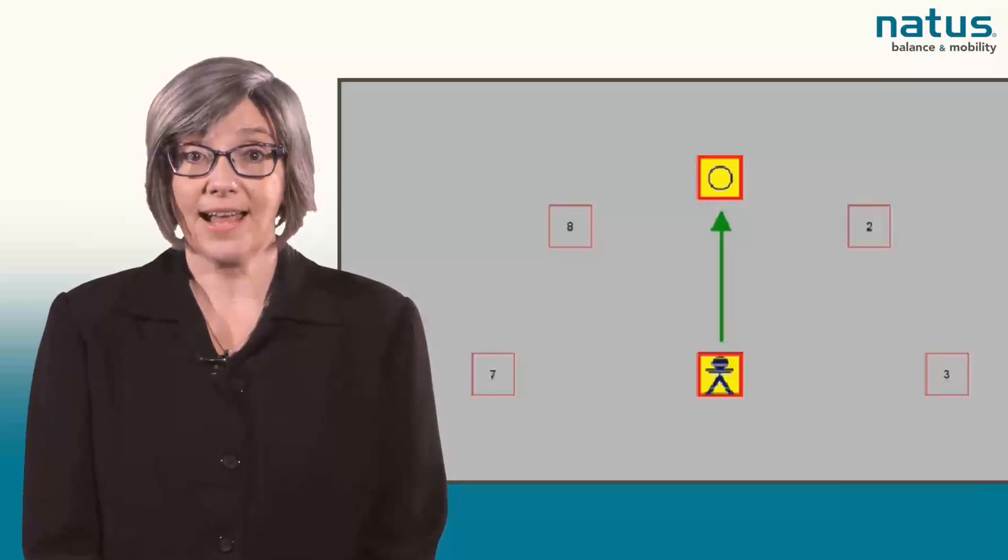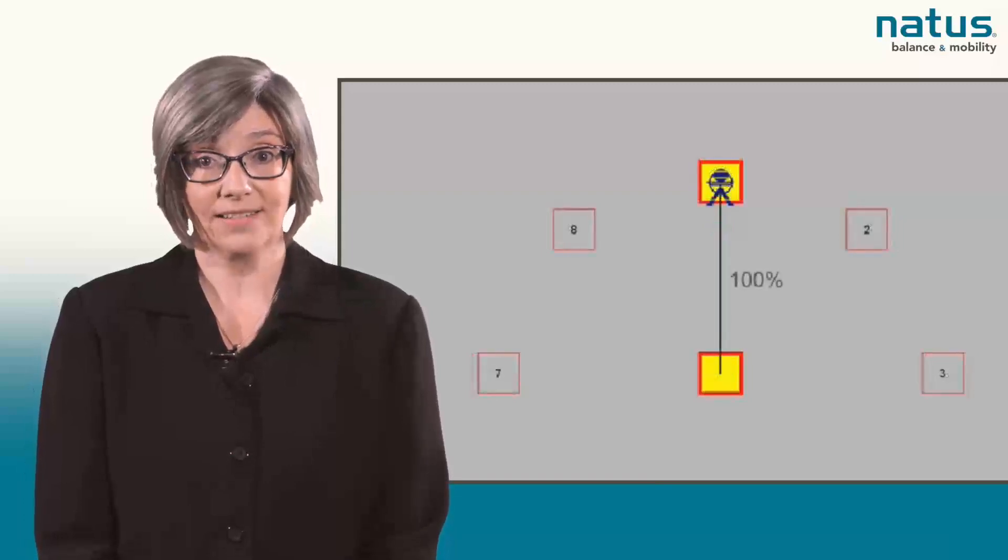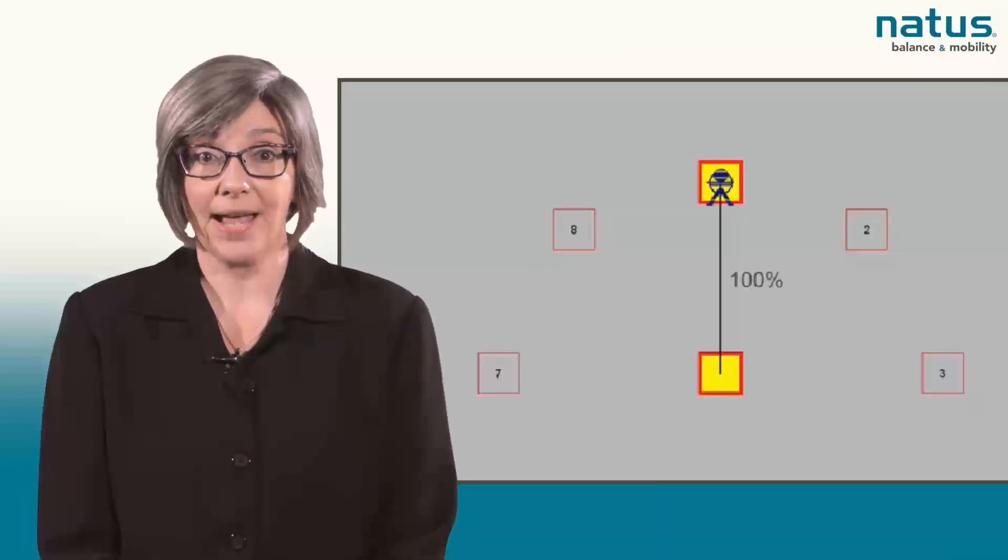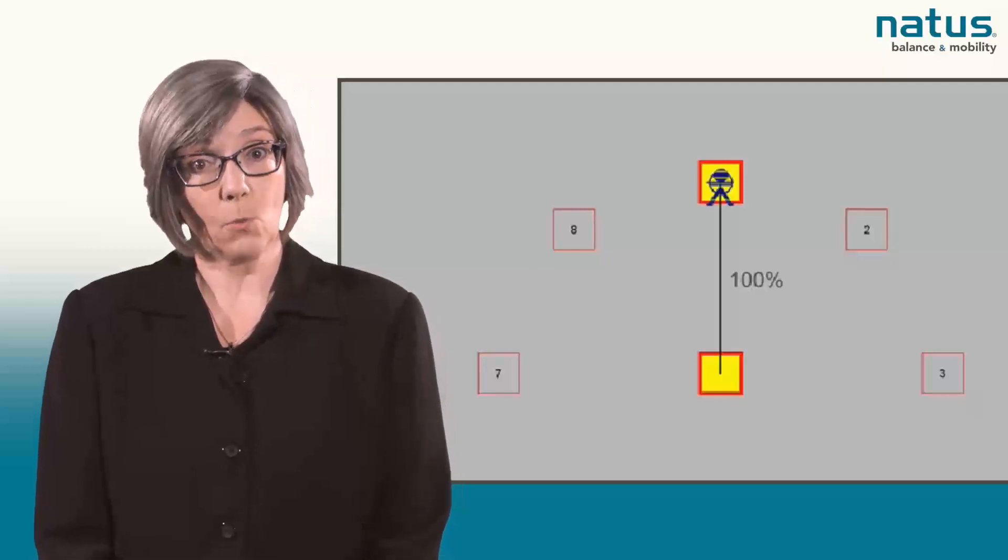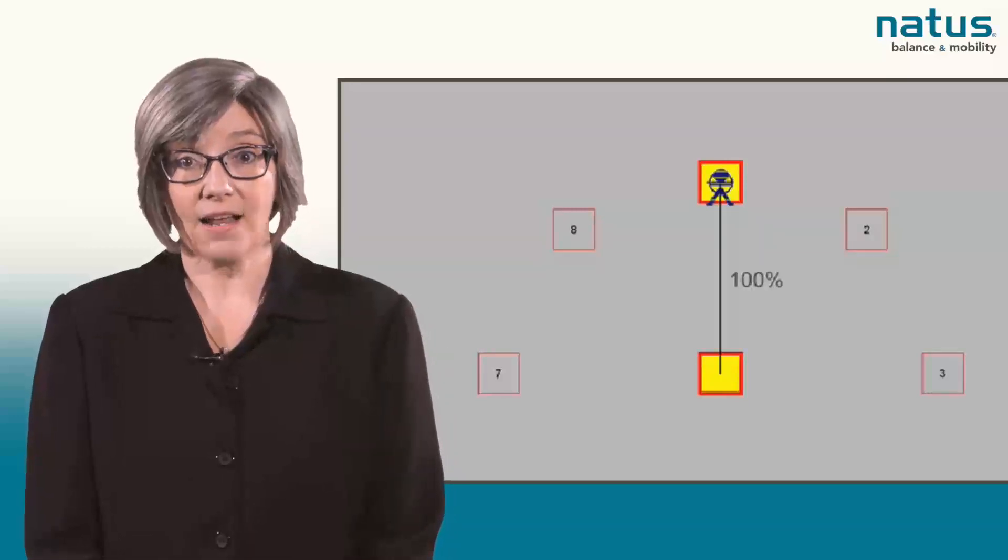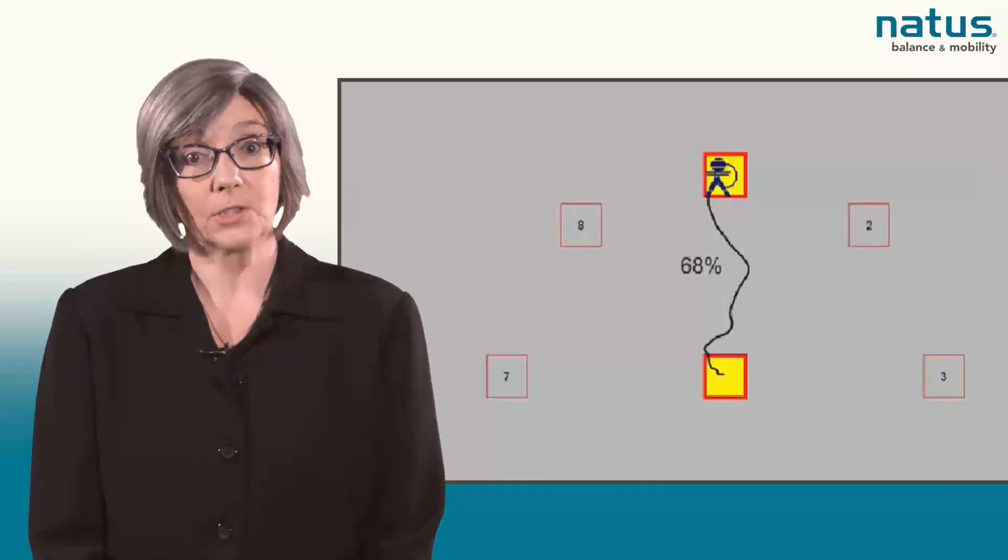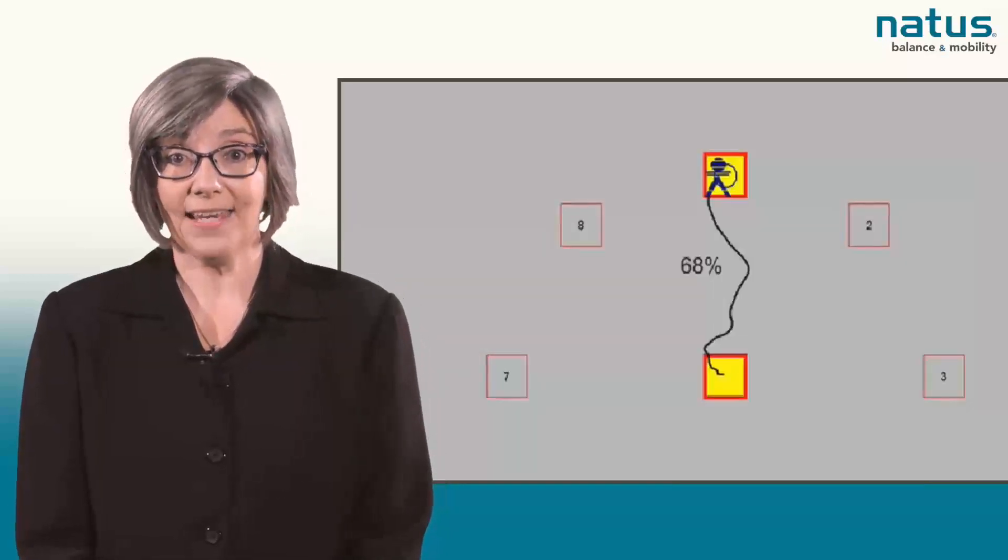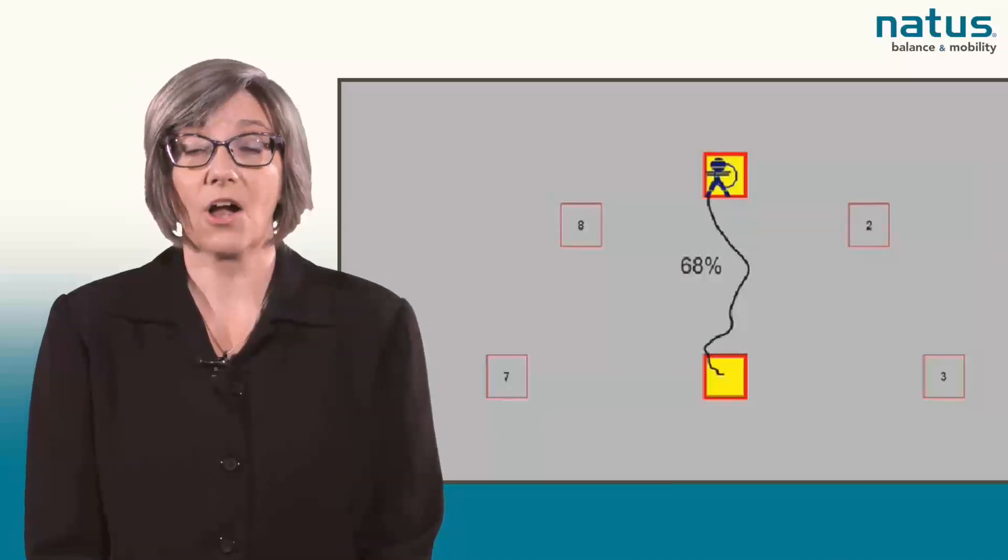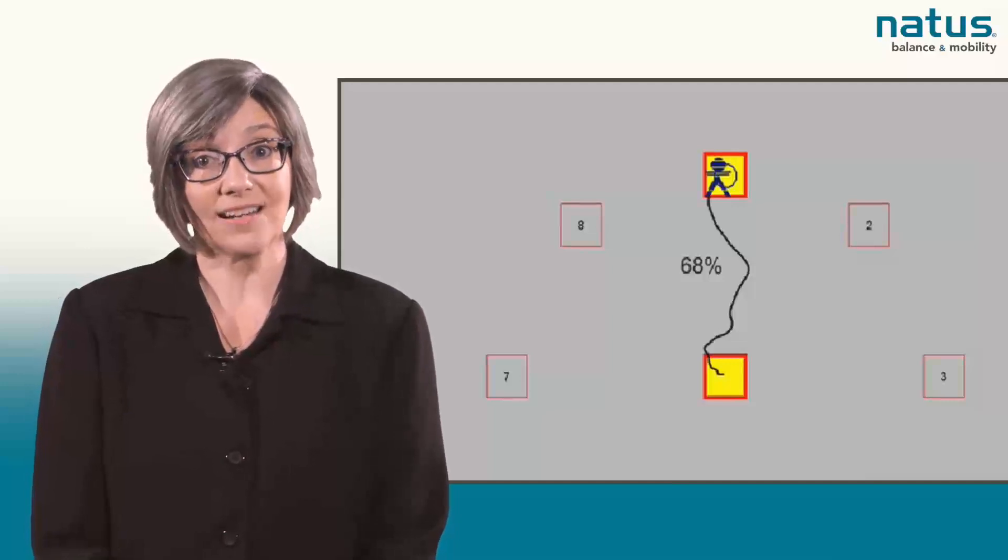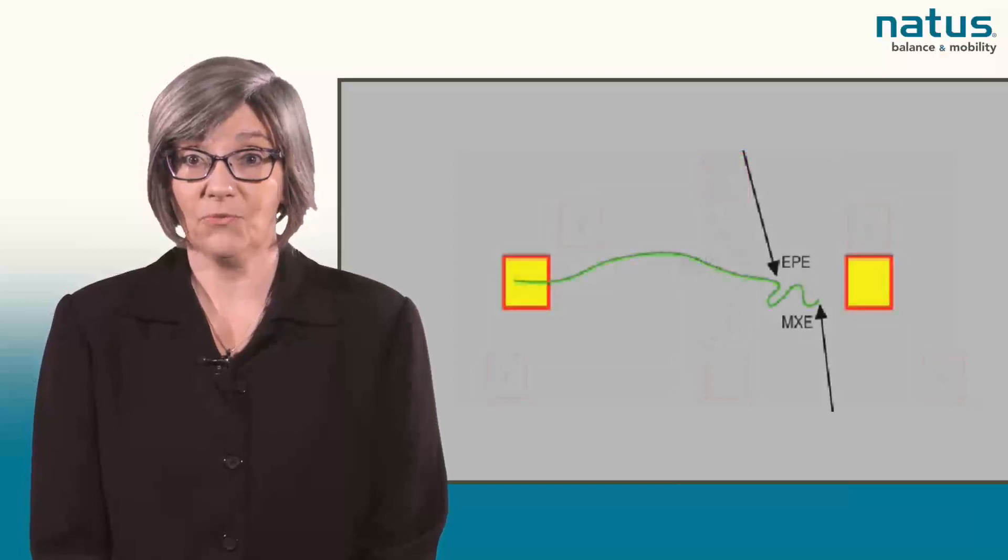Values can be interpreted as the percent accuracy of the self-initiated movement, and are compared to age-matched normative values. Values approaching 100% indicate a straight path toward the target. Values below 100% indicate the amount or percentage of the distance that the individual is off the intended path, a comparison of on-axis versus off-axis movement.